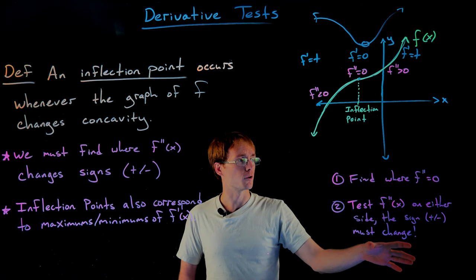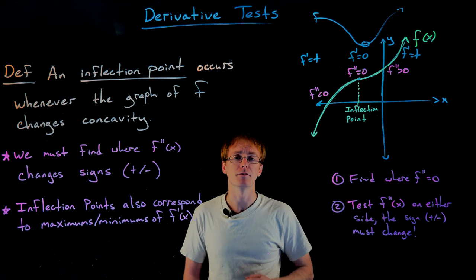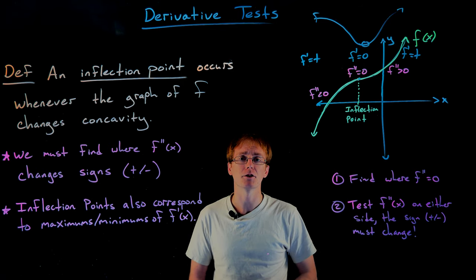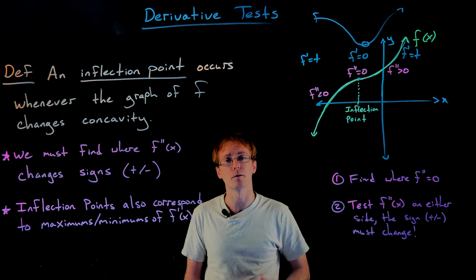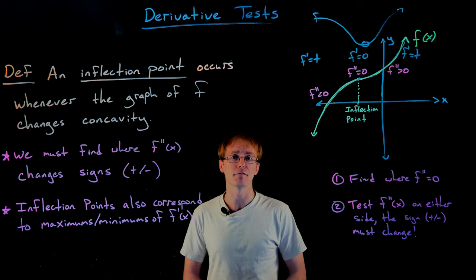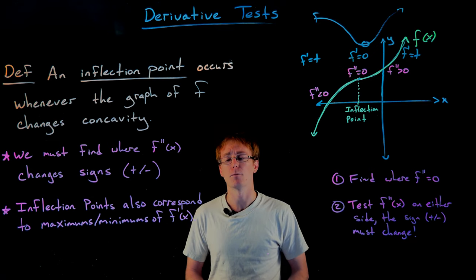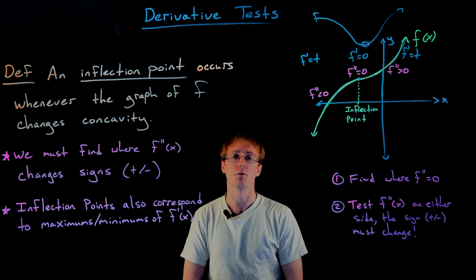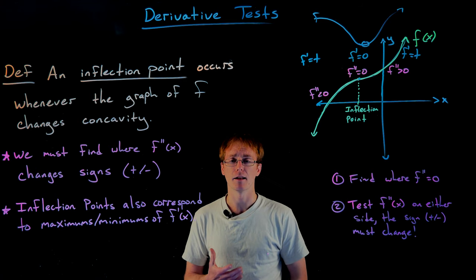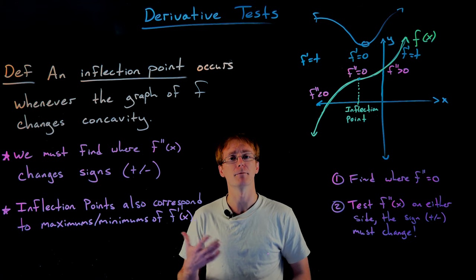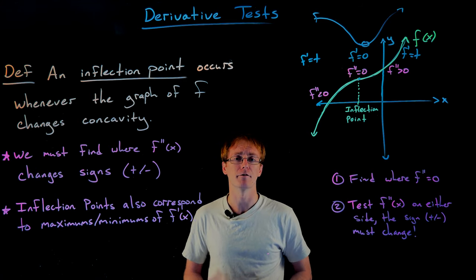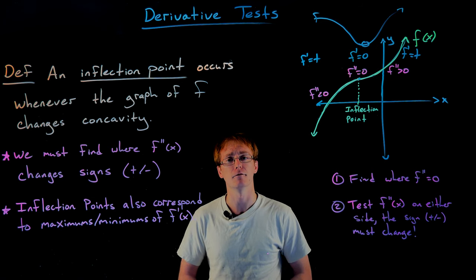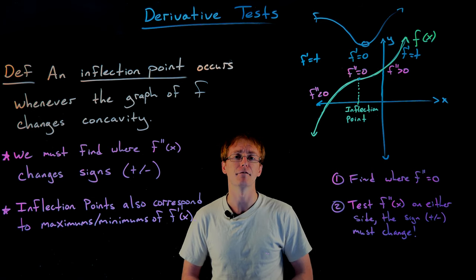When it comes to actually finding inflection points, we find where the second derivative equals zero and confirm a sign change. But for many contextual problems, the interpretation of the inflection point as a maximum or minimum of the derivative is really important. If you've ever heard terms like 'the point of diminishing returns' or 'the point of increasing returns,' those refer to certain types of these inflection points.